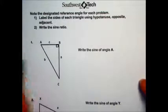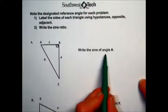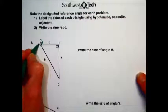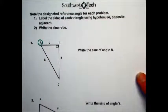In problem number one, they want us to write the sine of angle A. That means A is our designated angle for this problem. The first thing they're asking us to do is to label the sides of each triangle.